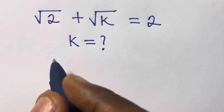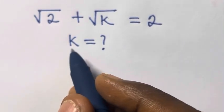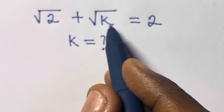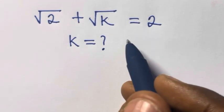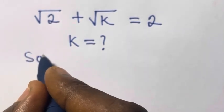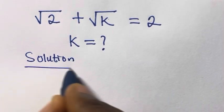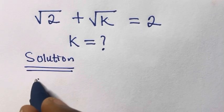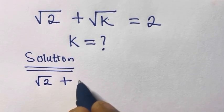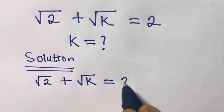Hi, welcome. In this video we want to solve for k in: square root of 2 plus square root of k equals 2. Let's solve this — solution: we have square root of 2 plus square root of k equals 2.